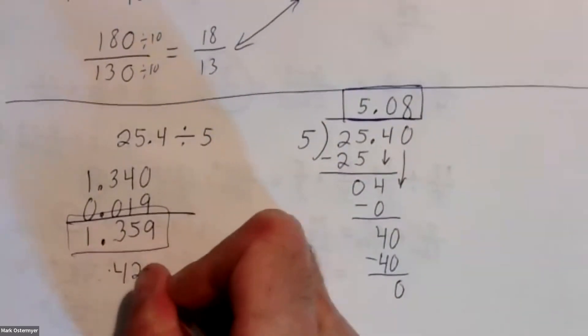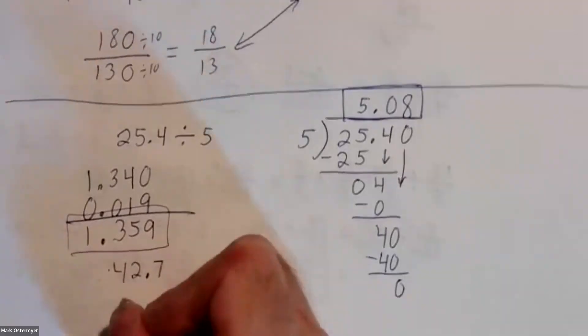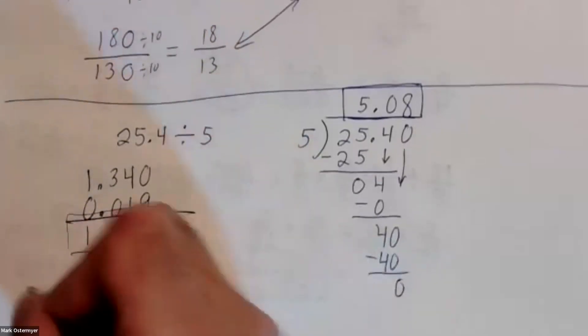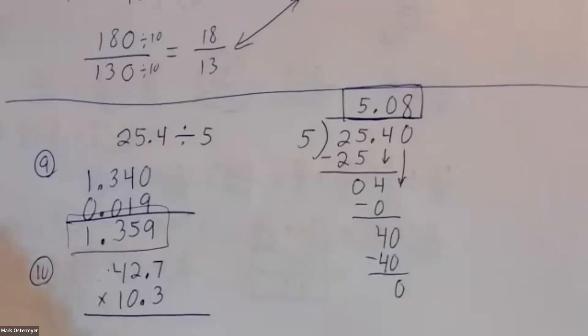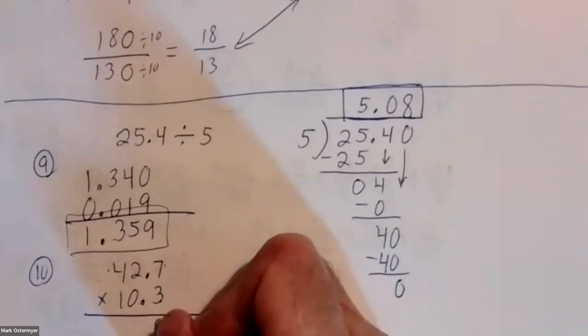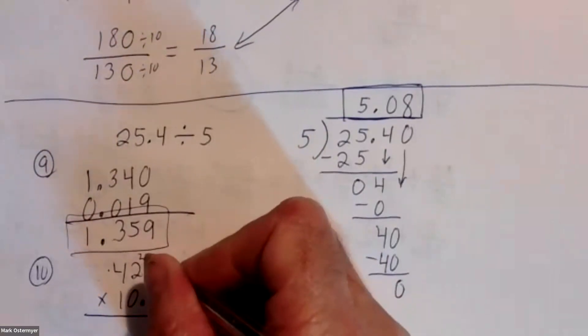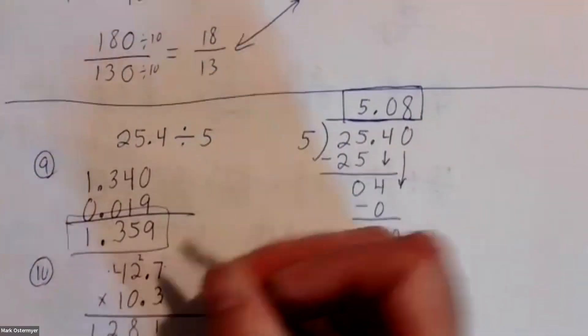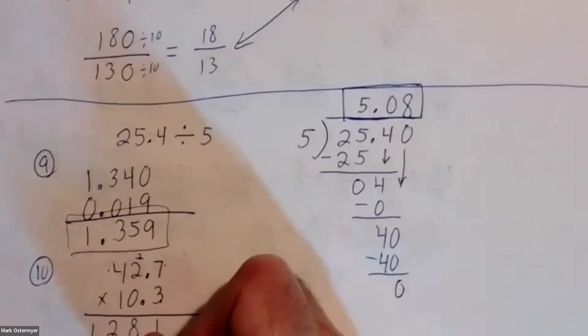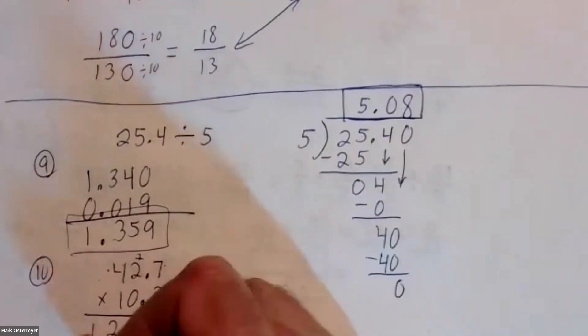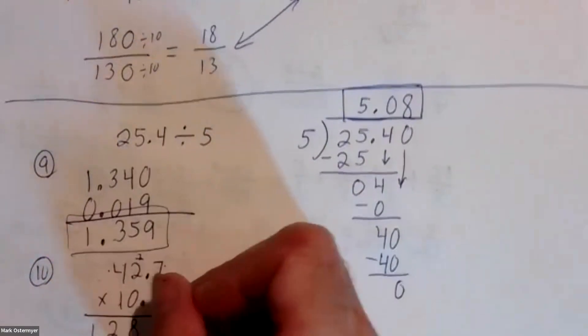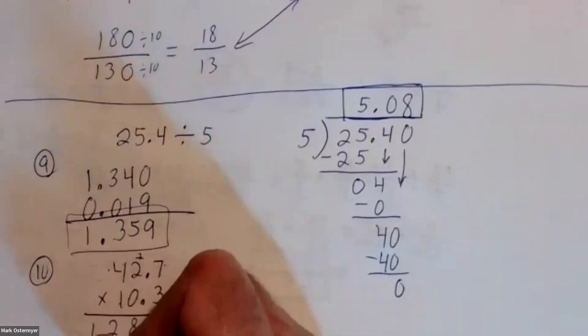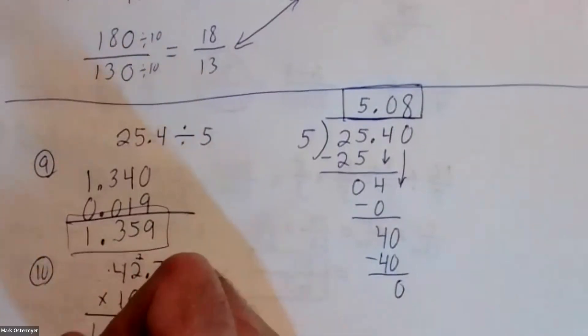Number ten: forty-two point seven multiplied by ten point three. Three times seven is twenty-one, carry the two. Three times two is six plus two is eight. Three times four is twelve. Zero times seven is zero — you don't have to do zero times the rest, just move from the zero to the one. One times seven is seven, one times two is two, one times four is four. Then add.